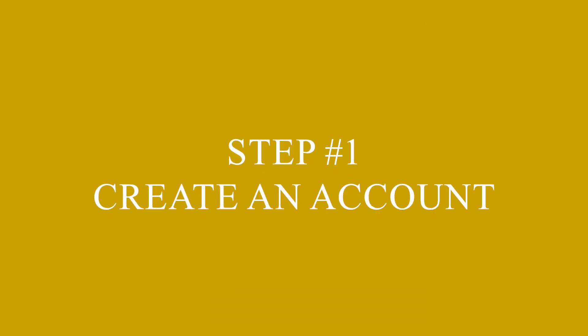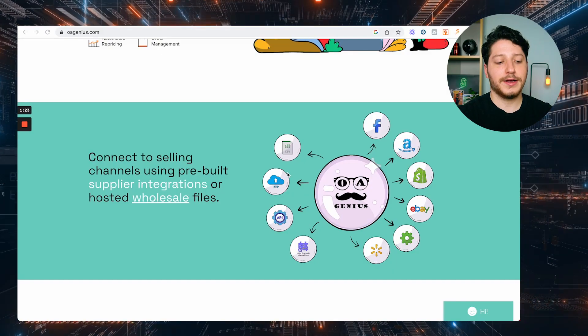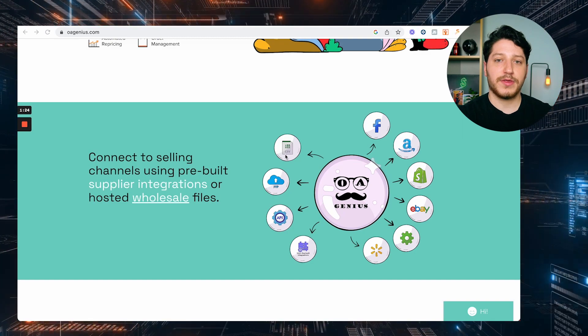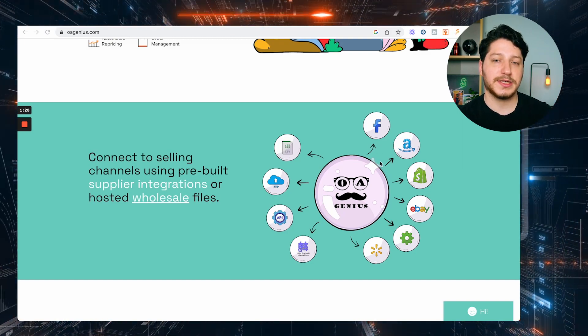The first step is to create an account, and OA Genius does offer a free trial. If you've done dropshipping in the past, then OA Genius might sound familiar. They used to do retail dropshipping, but about a year ago they added the ability to connect to wholesale suppliers. The great thing about the software is that it's built for dropshipping — you can connect your suppliers in multiple different ways, and you can also sell on multiple different marketplaces.